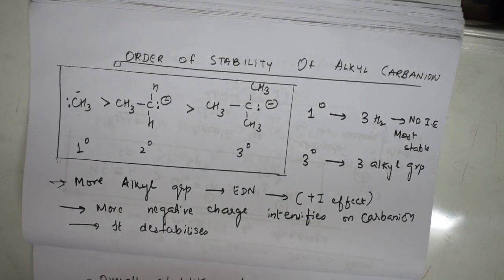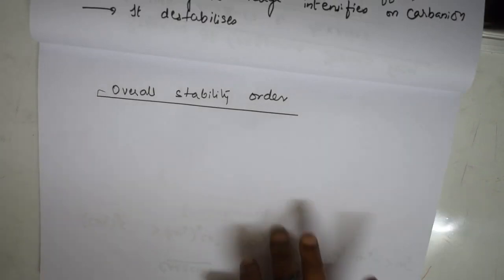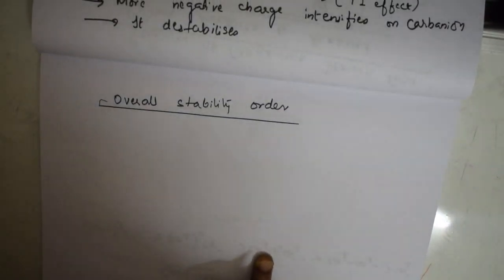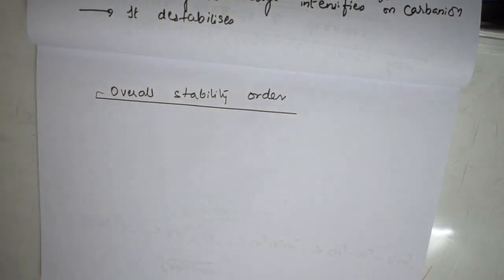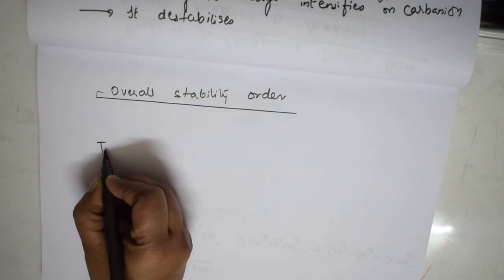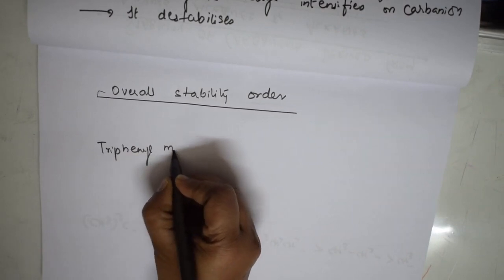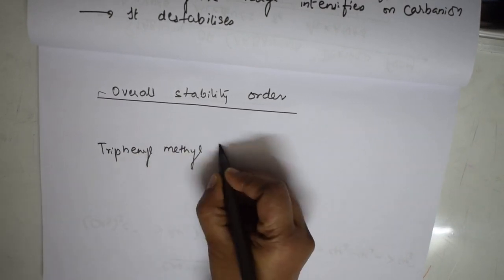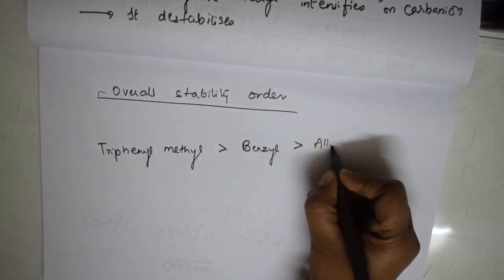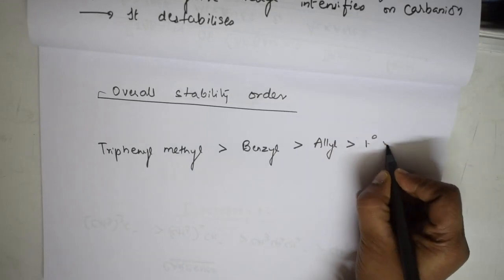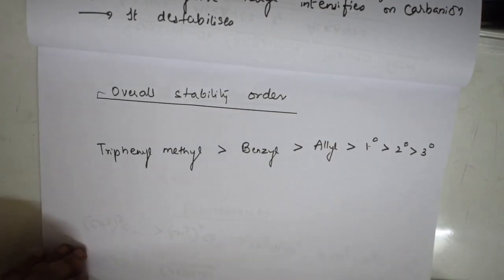The overall stability order of carbanions is: triphenylmethyl > benzyl > allyl > primary > secondary > tertiary.